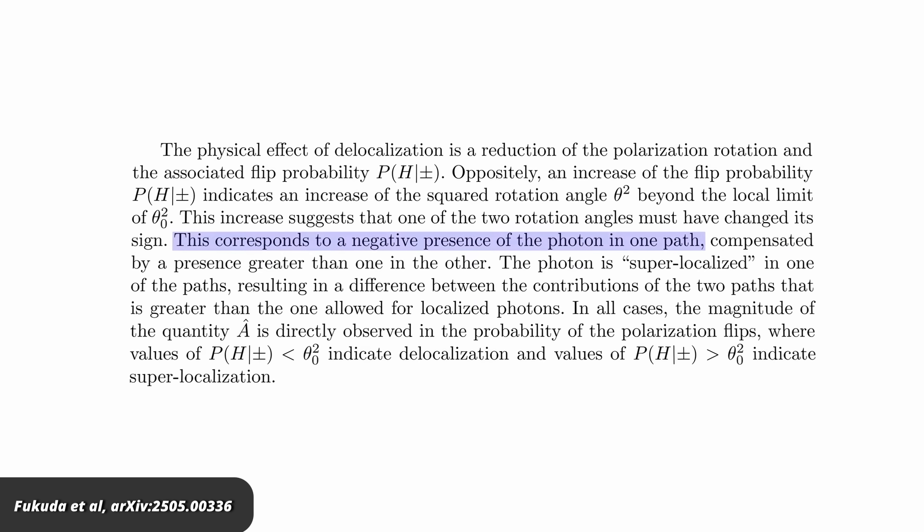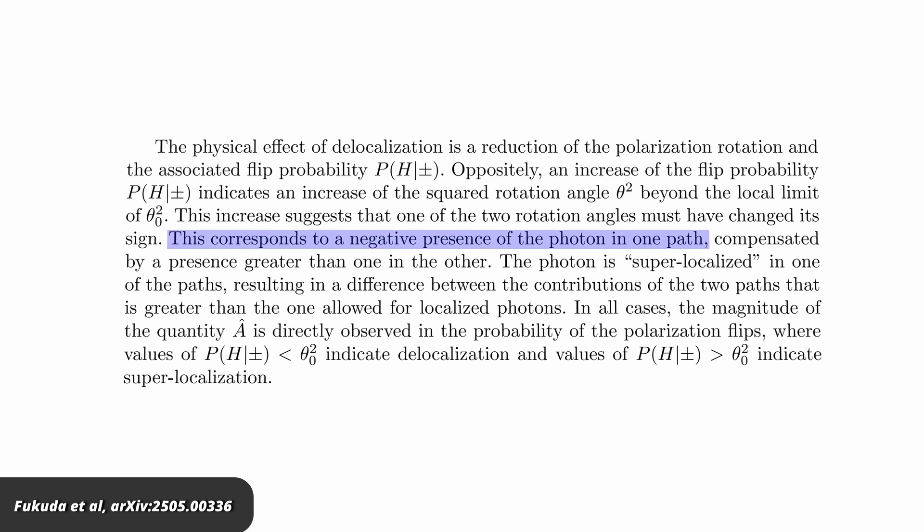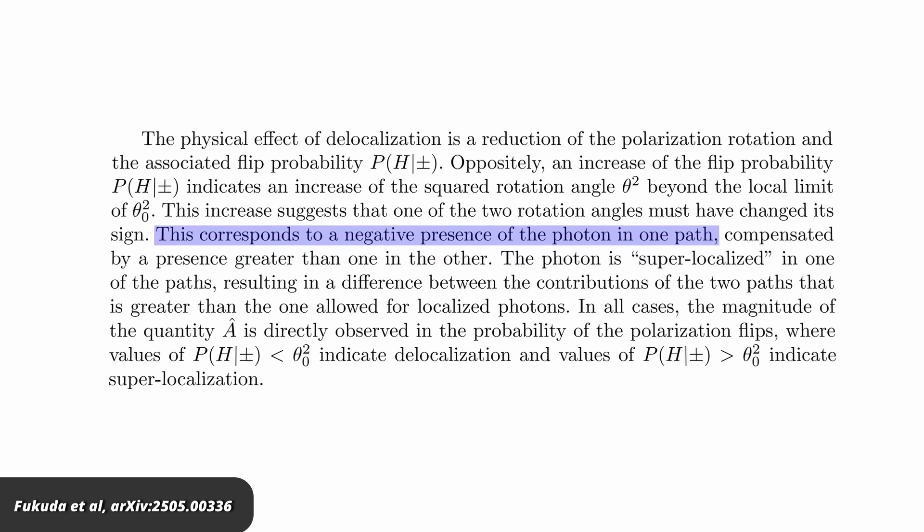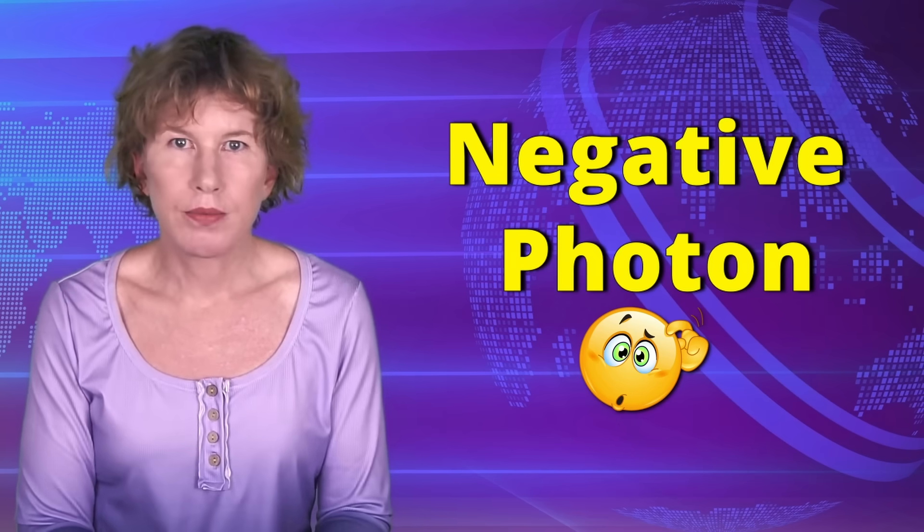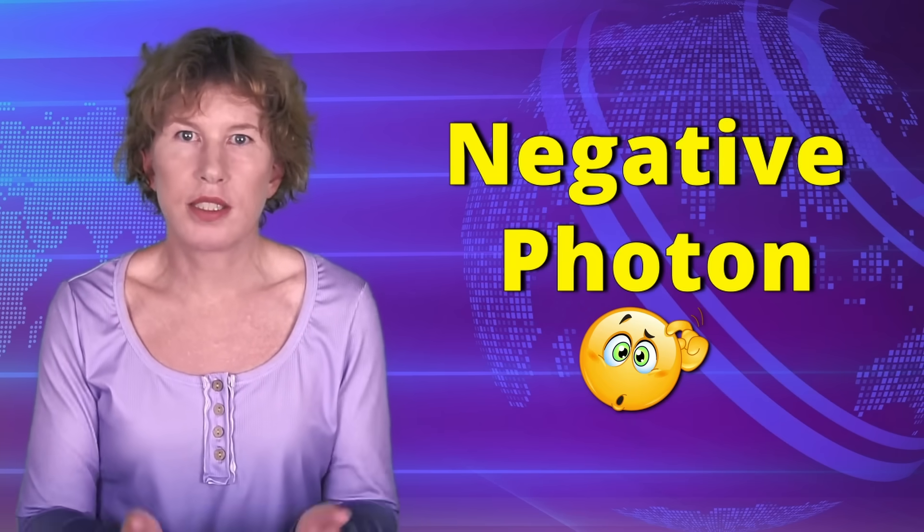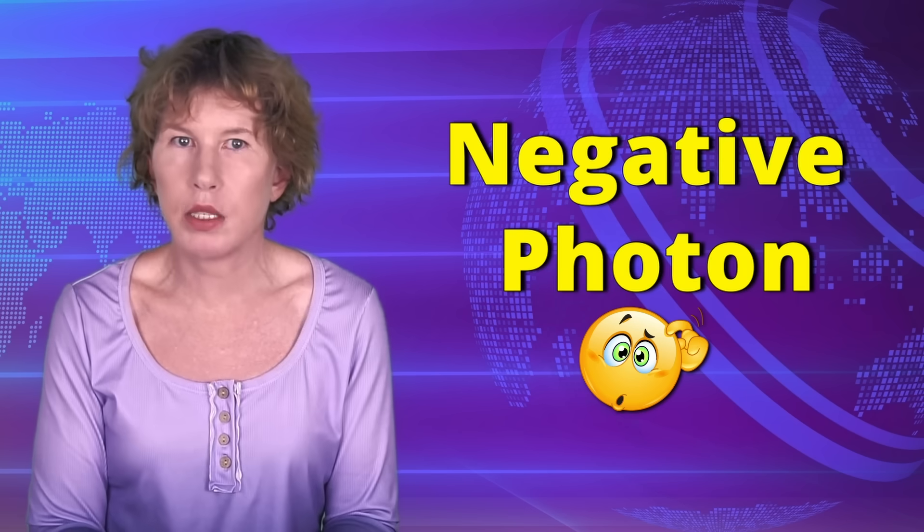They also see some photons in the dark port and say that this happens because there was a negative fraction of a photon on one arm. A negative photon. Not to be confused with a pessimistic photon, which just assumes no one will detect it anyway.